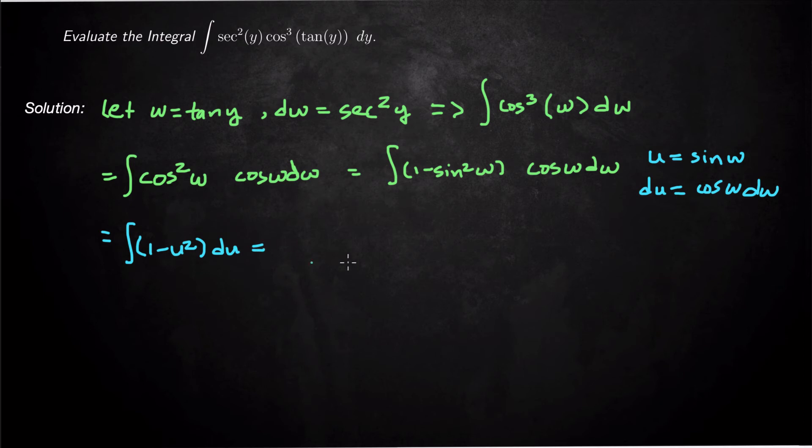So that's going to give us the integral of 1 minus u squared du, which is u minus u cubed over 3 plus c. And if we go back to, in terms of w, that's actually sine of w. So this is going to be sine of w minus sine cubed w over 3 plus c.